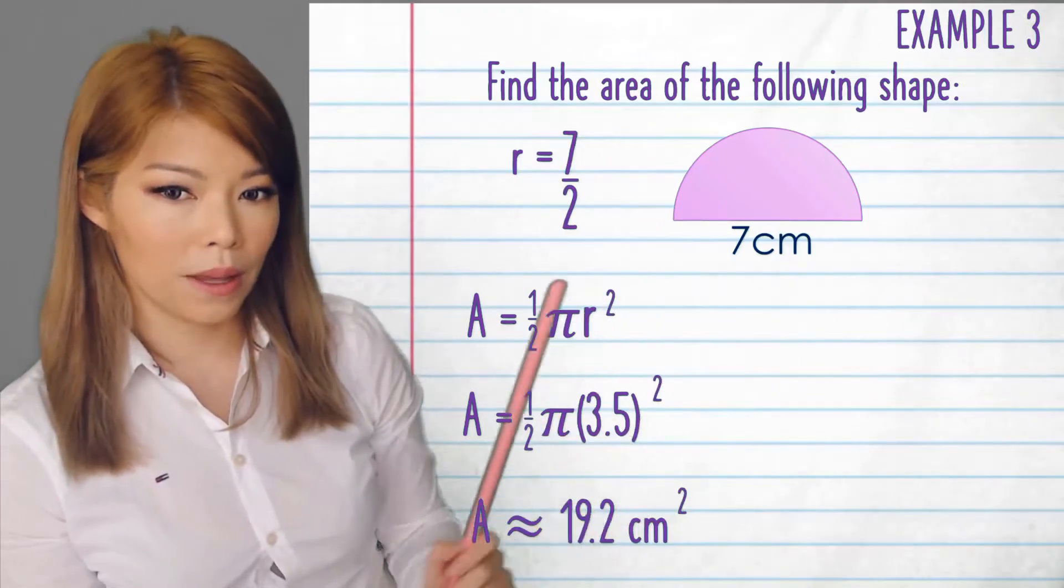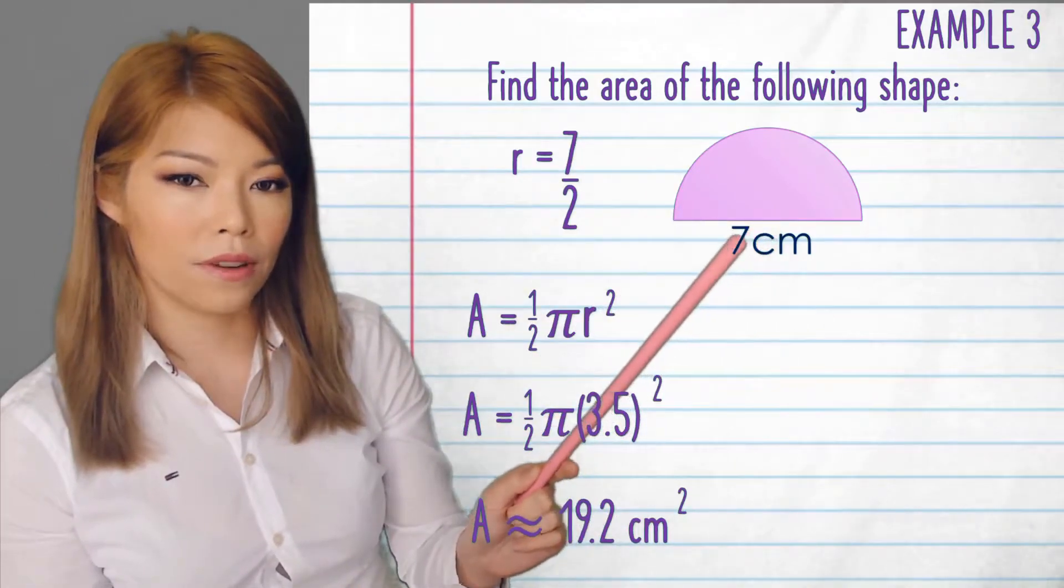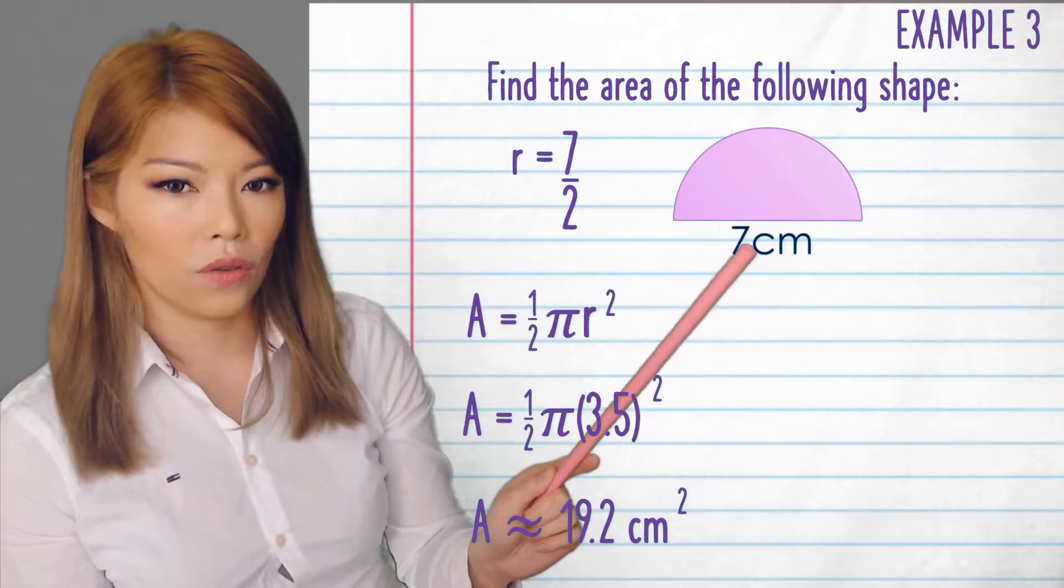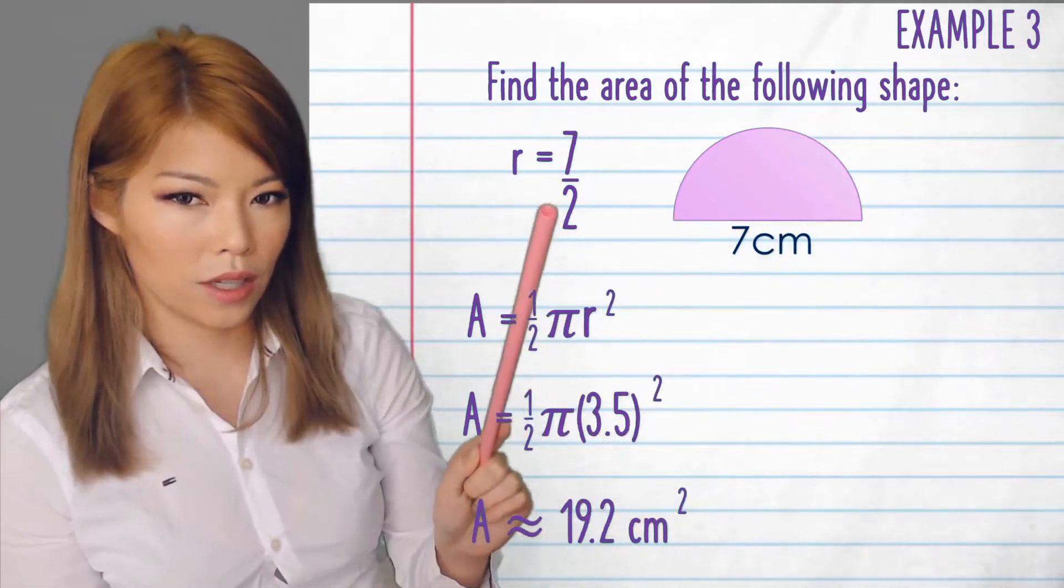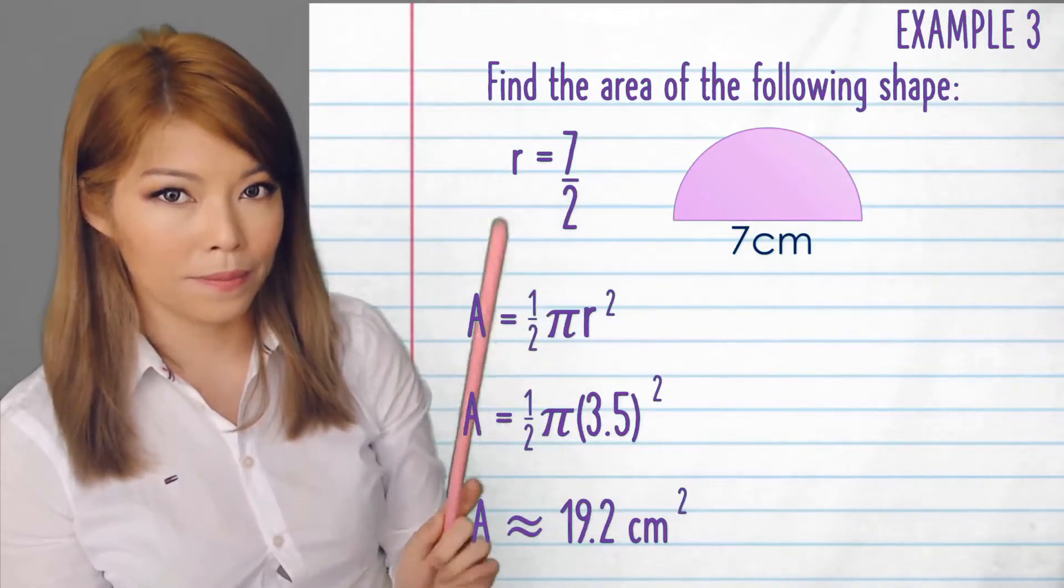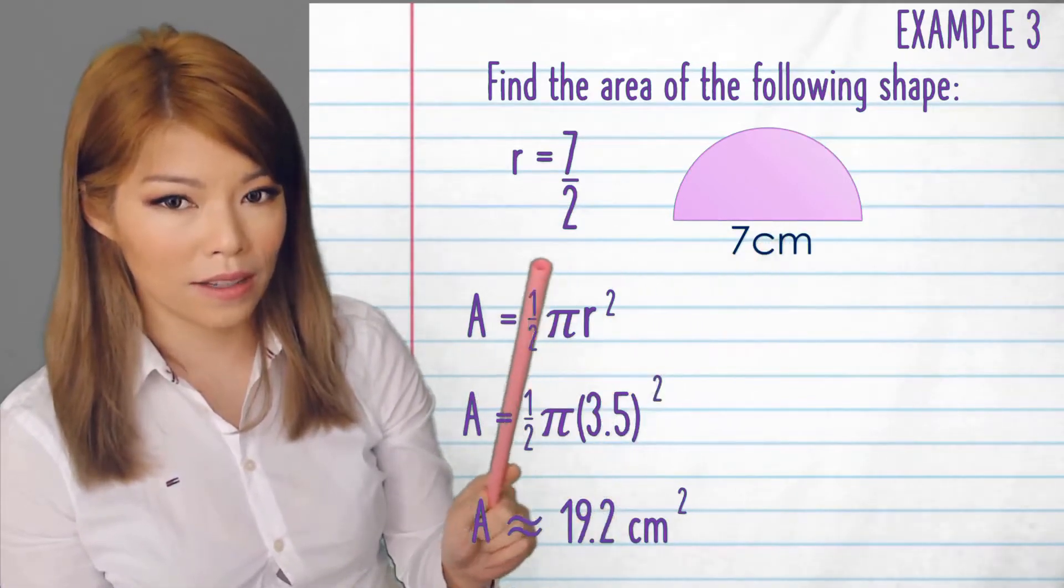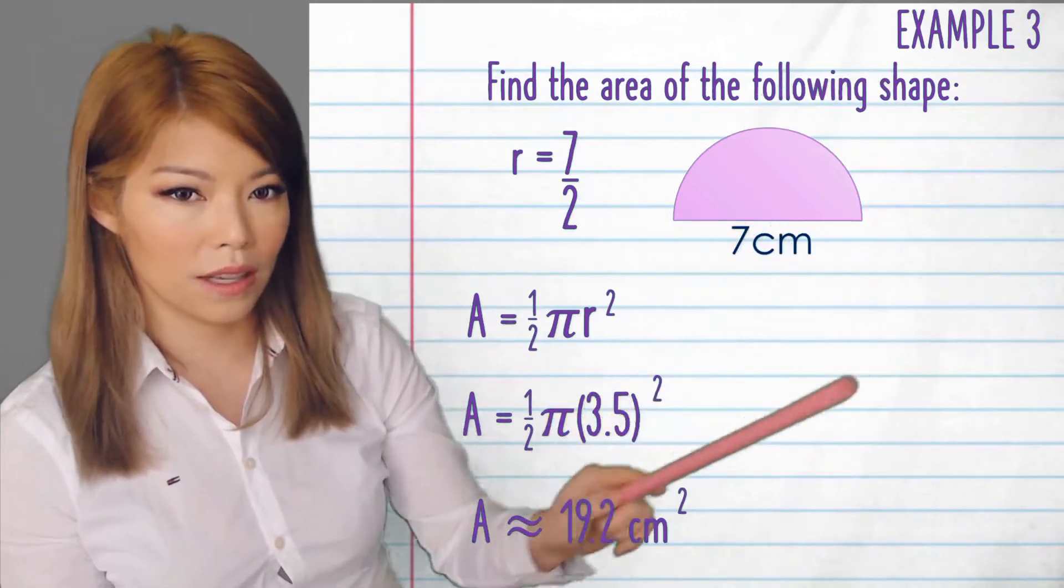This question is tricky because, one, you might forget that you've divided by 2 already because of diameter. And you might forget to divide by 2 because it's half a circle. So there's 2 dividing by 2 here. Be very careful. If they give you the radius, then you only divide by 2 once because it's half a circle.